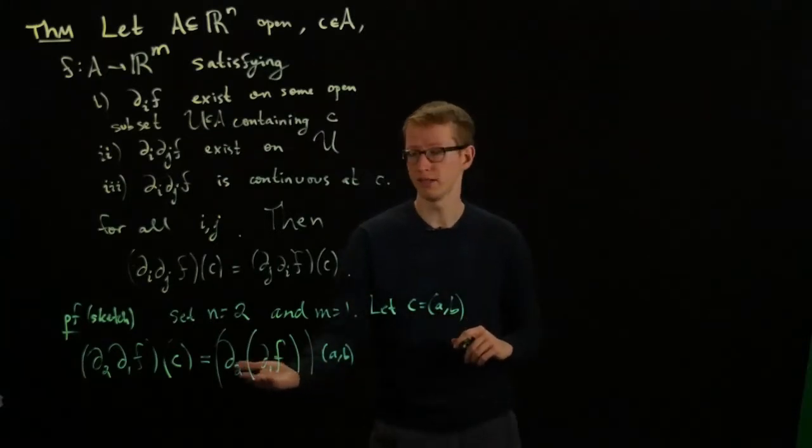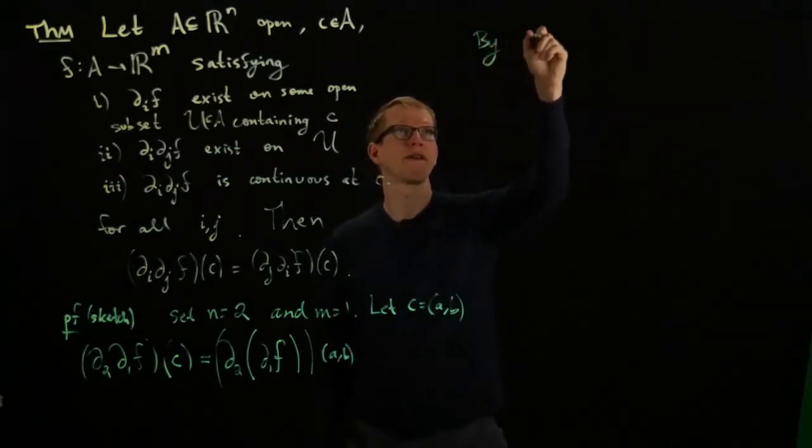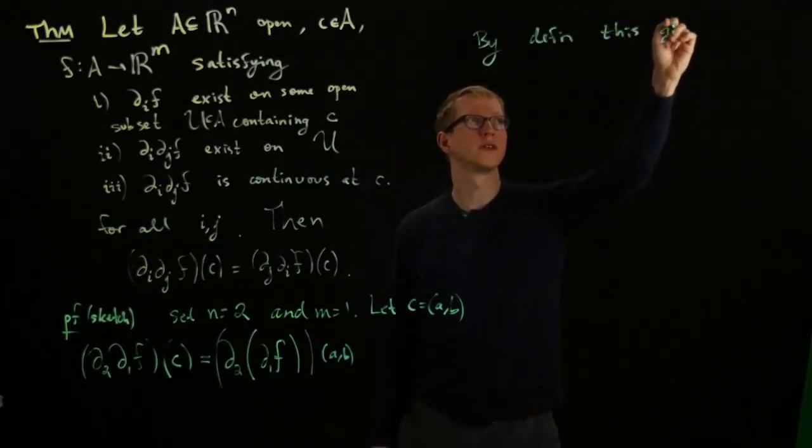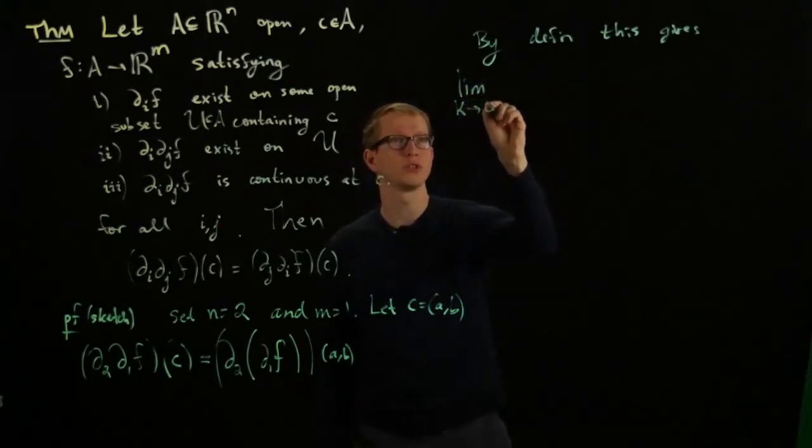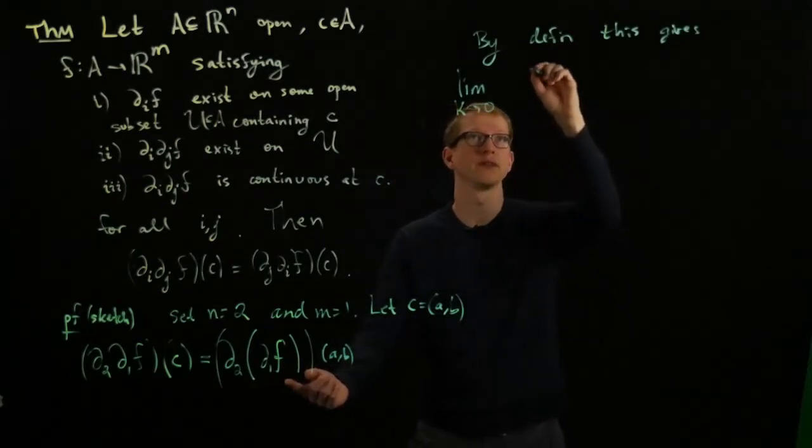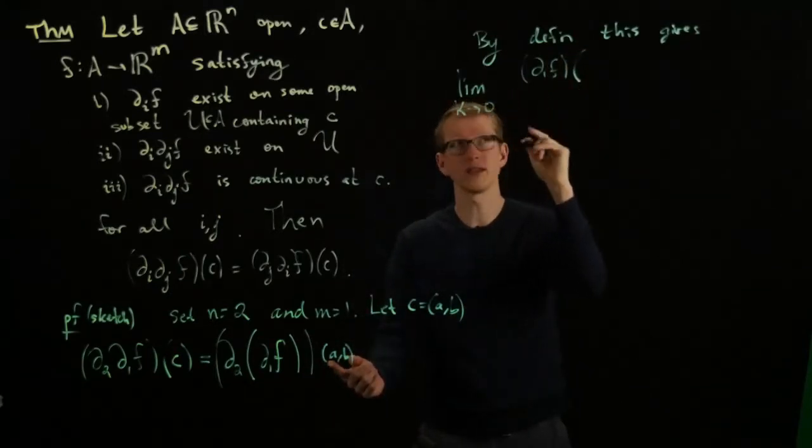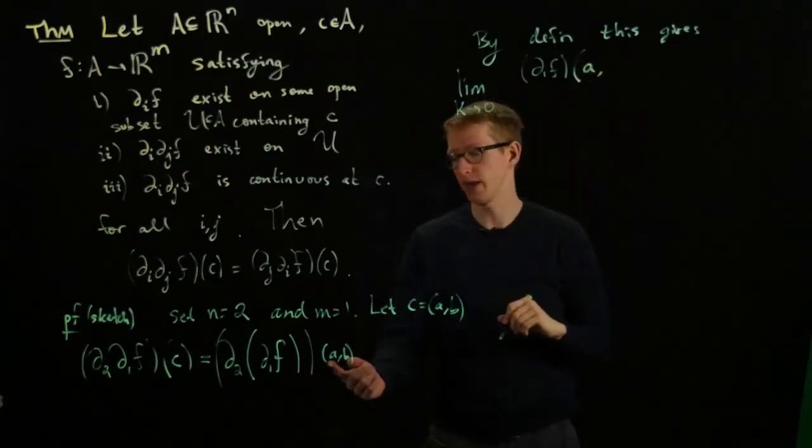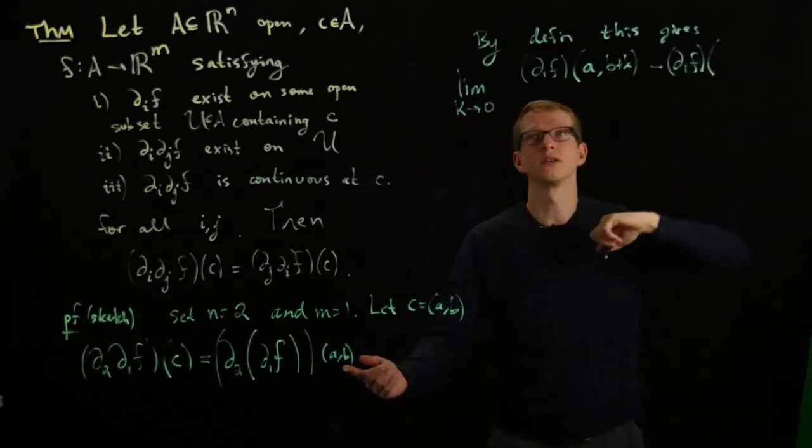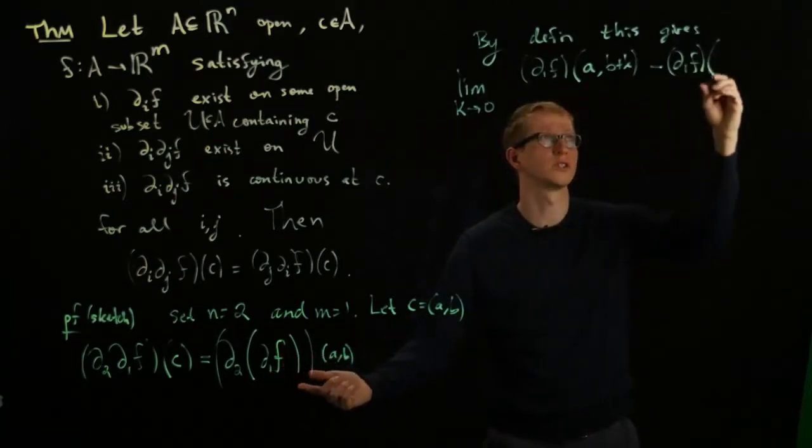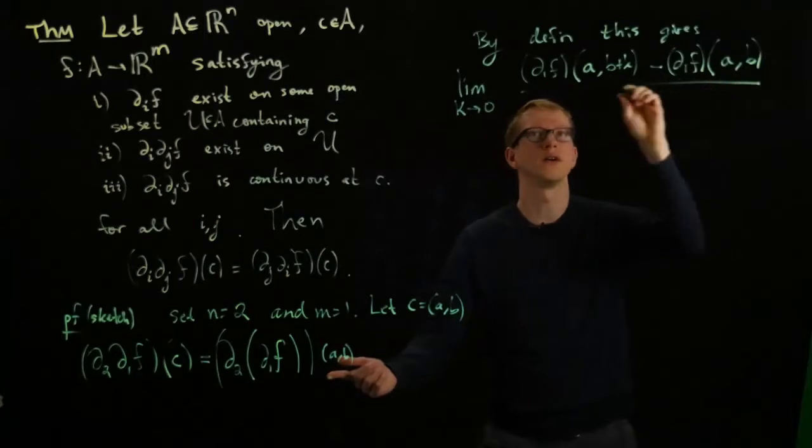Let's write out what taking the second partial derivative does on this function. By definition, this gives the limit as k approaches 0 of the function ∂₁F evaluated at—here we're taking the derivative with respect to the second variable so the first variable is fixed—we have (a, b+k) minus this function at (a,b), and then we're dividing this all by k.